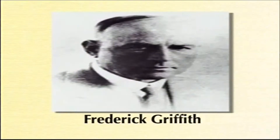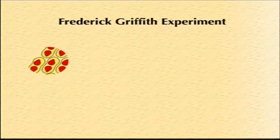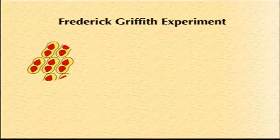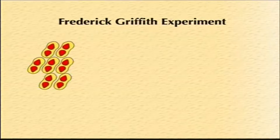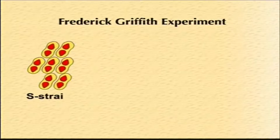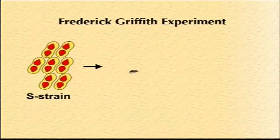The demonstration of bacterial transformation by Griffith resulted from a few consecutive steps. In the first experiment, when mice were injected with the S strain of the bacterium, the mouse died.